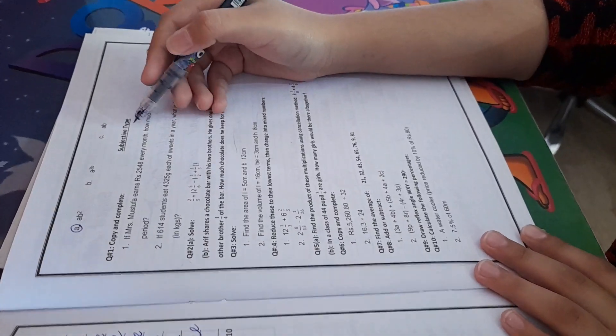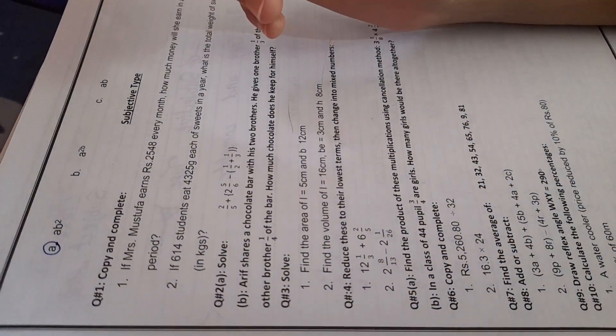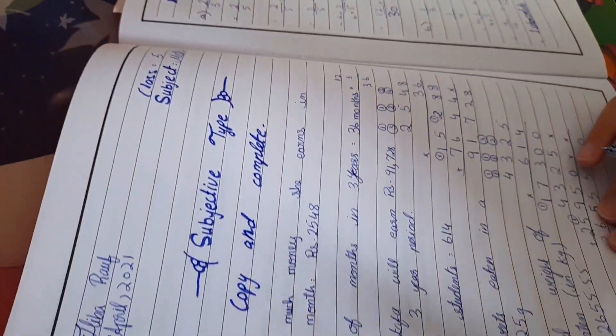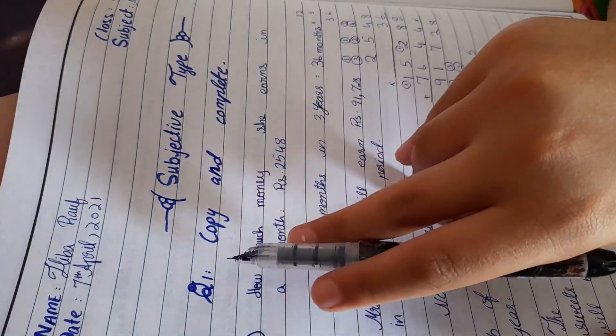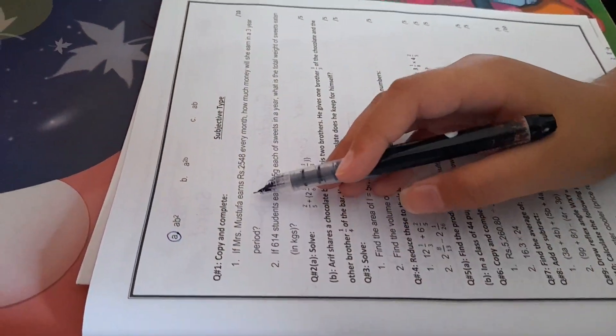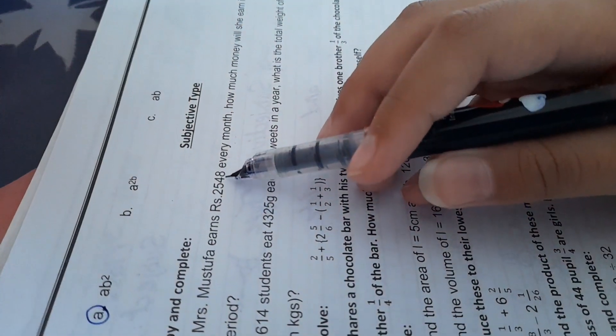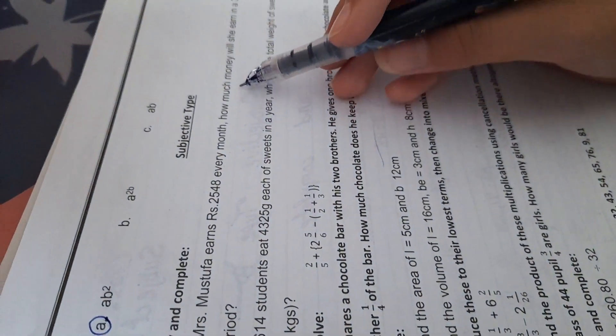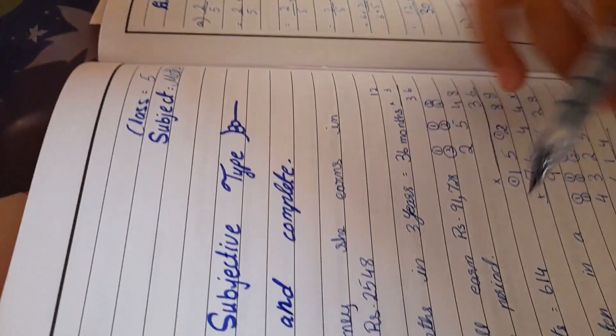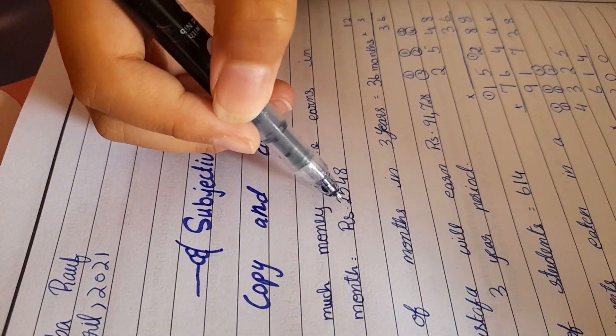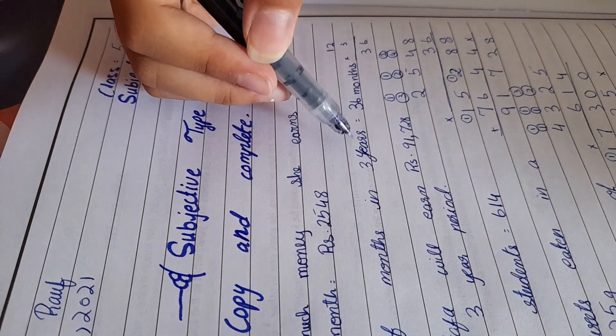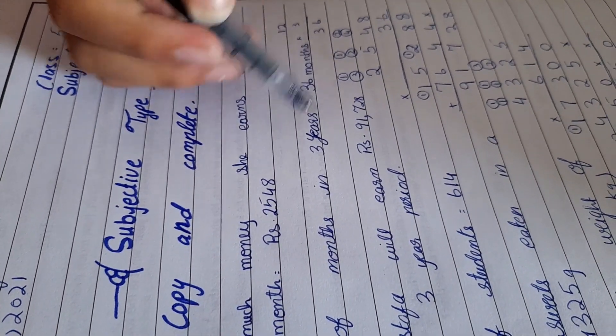So now, we will do the subjective part of our question paper. And first of all, we have question number one, copy and complete. If Ms. Mustafa earns rupees 2,548 every month, how much money will she earn in a three-year period? How much money she earns in a month? Rupees 2,548. Number of months in three years, there are 36 months in three years.